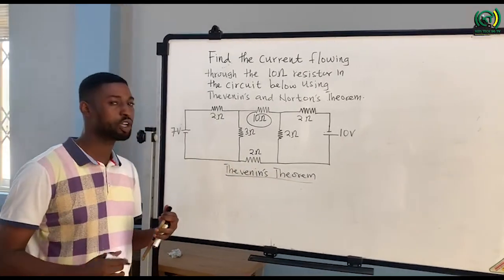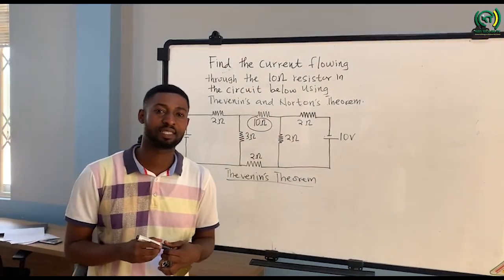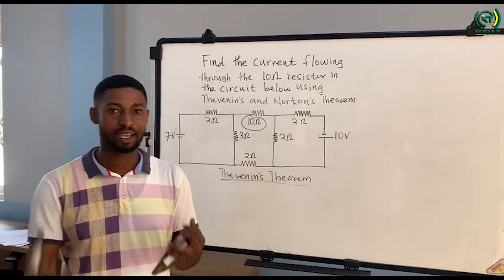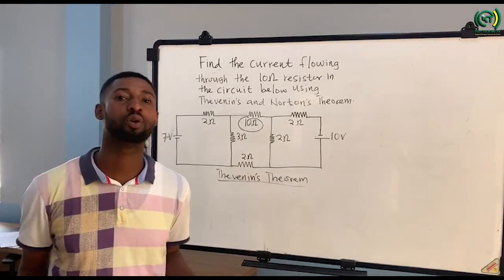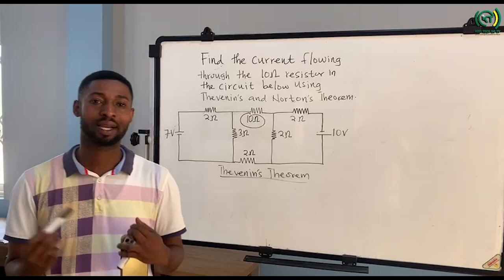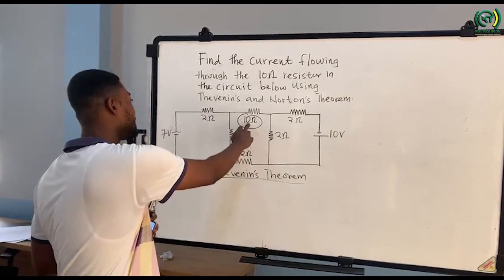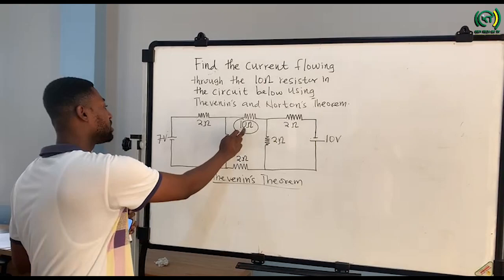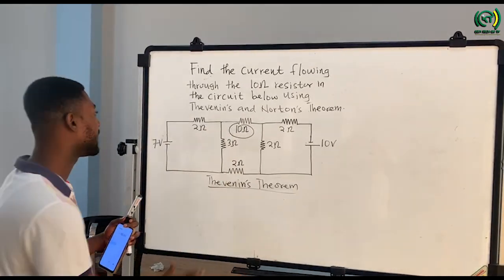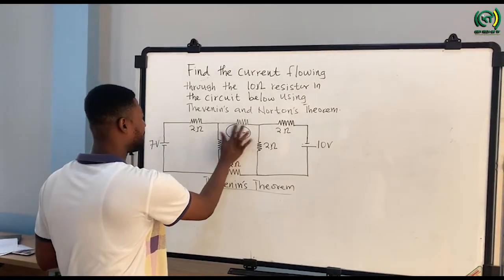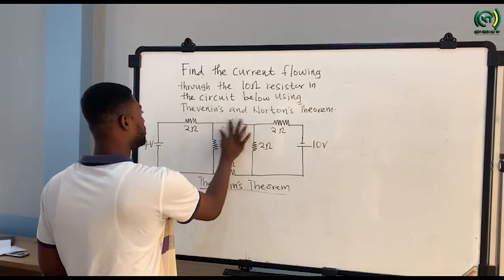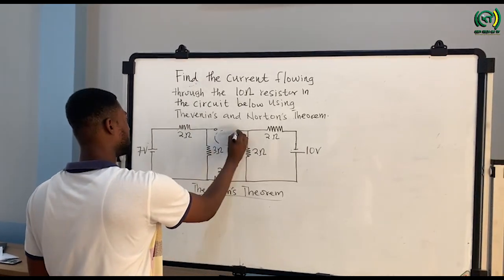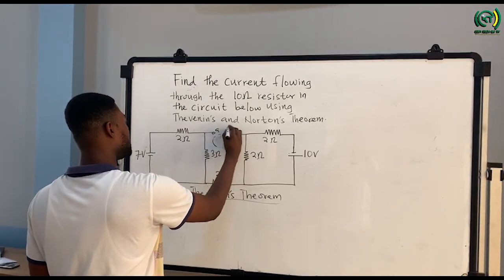Whenever you want to use Thevenin's Theorem there are specific rules and regulations you are supposed to follow. The first one is we are supposed to remove the load resistor and mark the terminals. So this 10 ohm resistor becomes our load resistor. We remove it from the circuit and mark the terminals A and B.